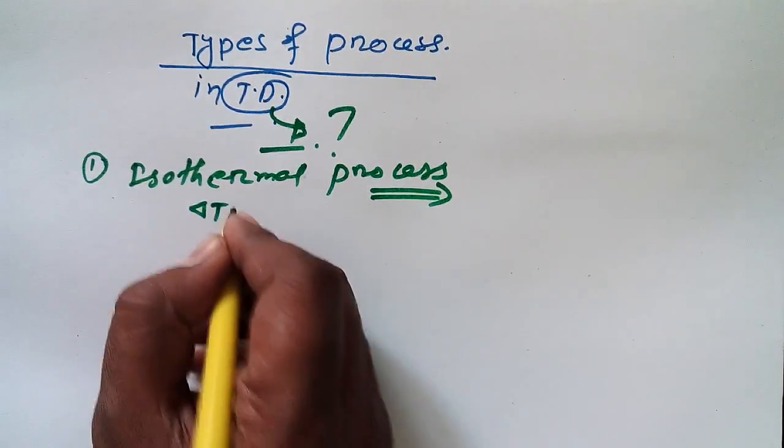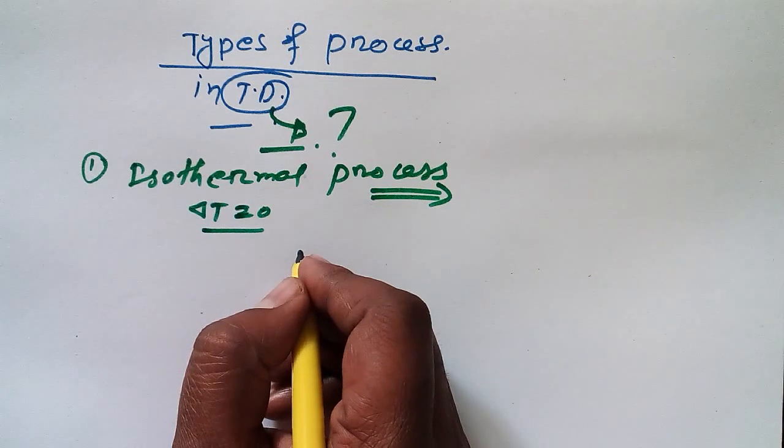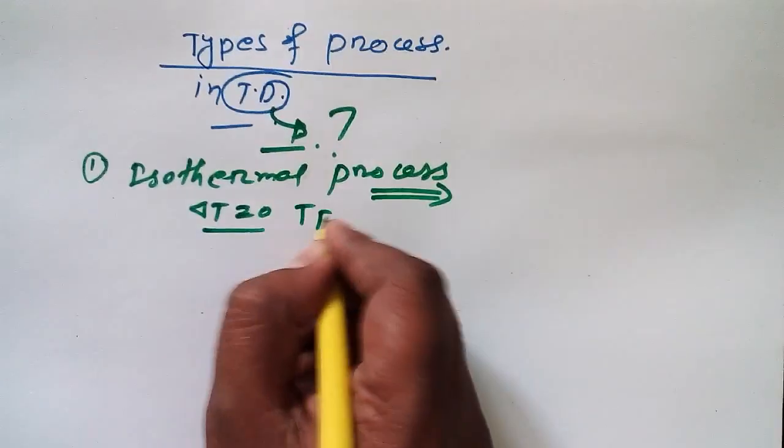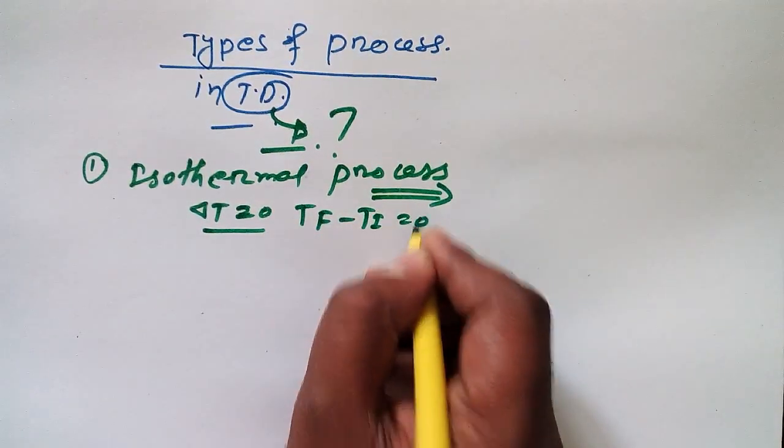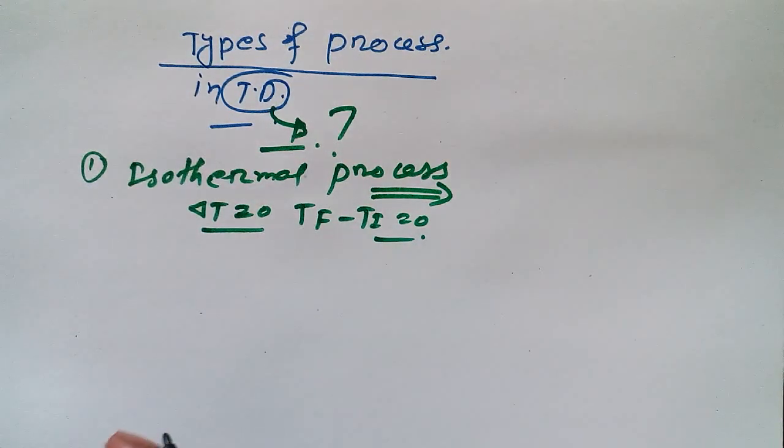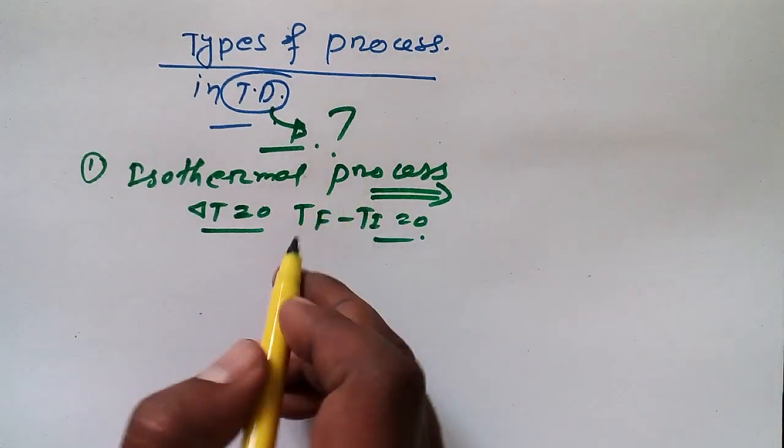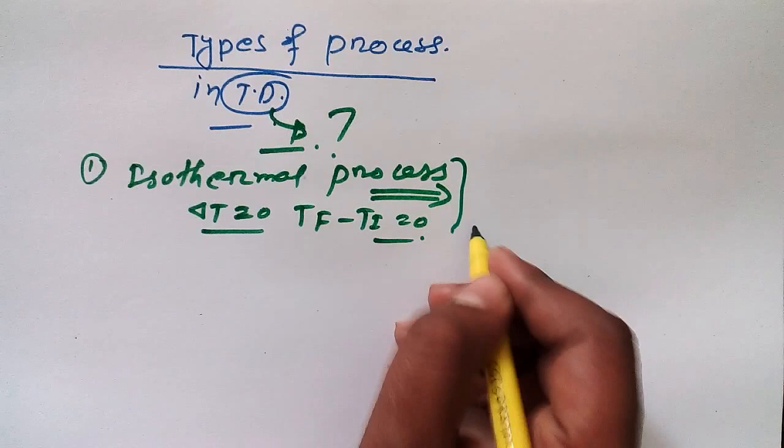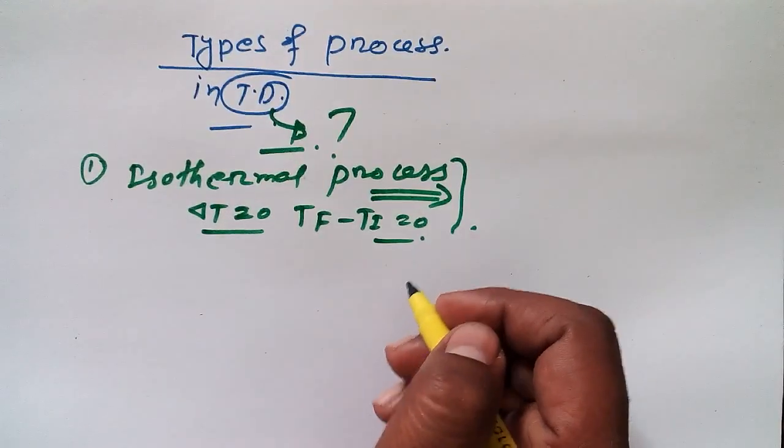So we always say Delta T is equal to zero, meaning the temperature final minus temperature initial is equal to zero. When there is no change in temperature, that's why this is known as isothermal process.